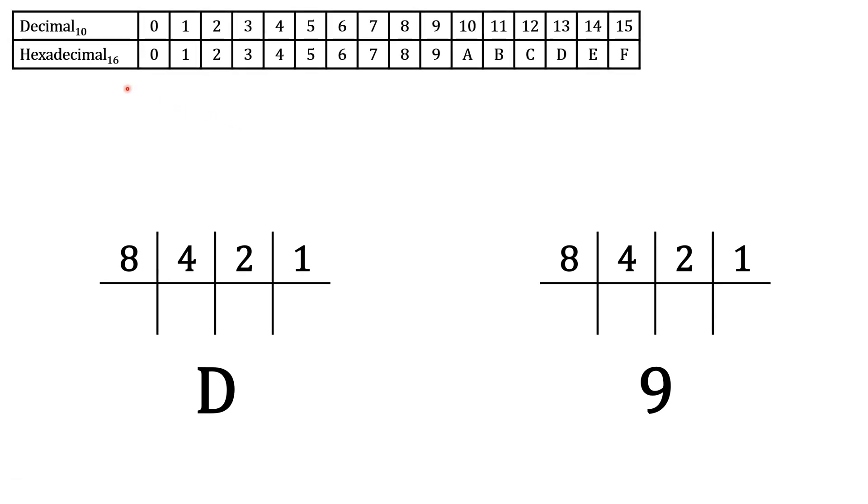Let's look at this table that compares decimal or base 10, which is what we're used to using, with hexadecimal which is base 16. They're the same up to nine, but after that hexadecimal starts using letters all the way through F.